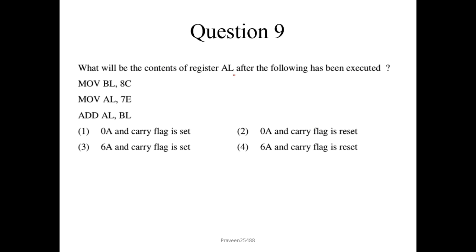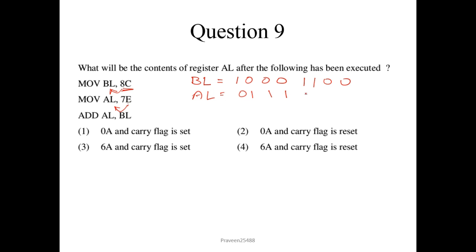Question number 9. What will be the contents of register AL after the following is executed? MOV BL, 8C — this moves 8-bit hex data 8C into register BL. In binary, BL = 1000 1100. MOV AL, 7E — contents of AL = 0111 1110. ADD AL, BL — the contents of BL are added to AL and the result is stored in AL. Binary addition is performed.